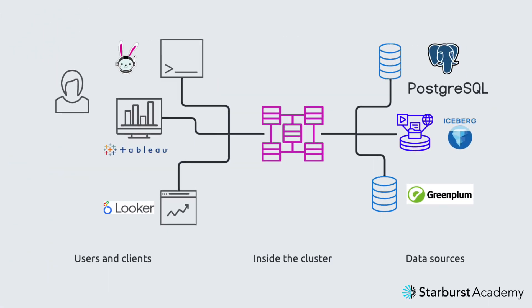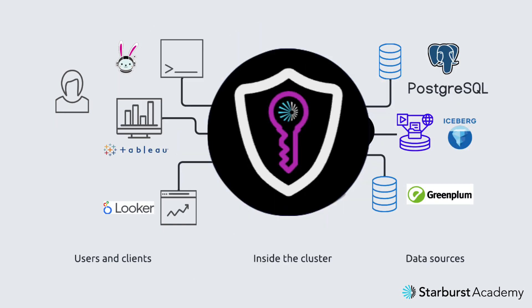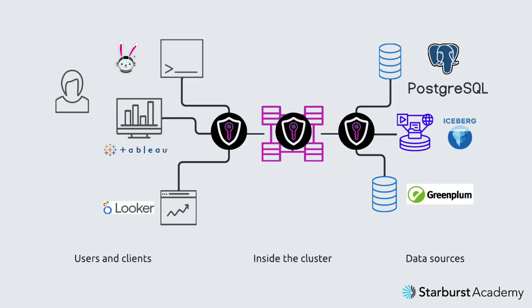Starburst platforms include three main types of security measures: security between the cluster and the clients, security between the cluster and the data sources, and security within the cluster itself.